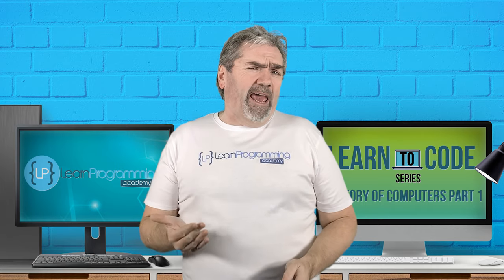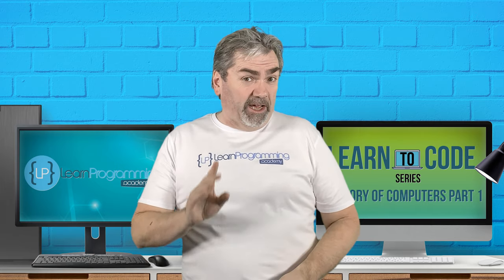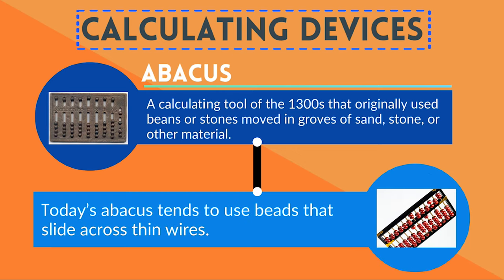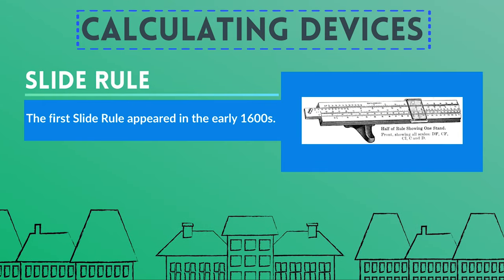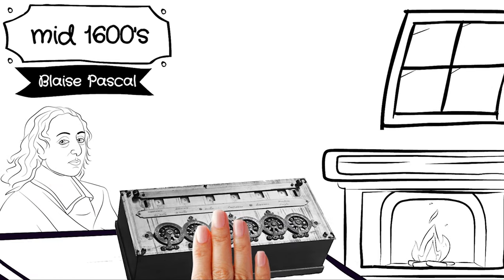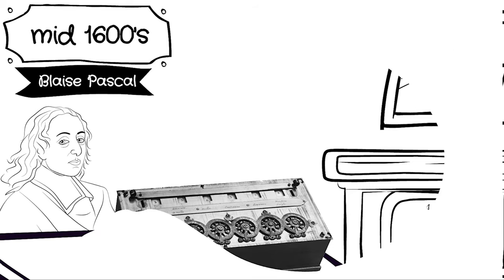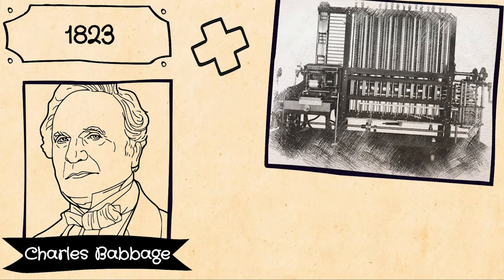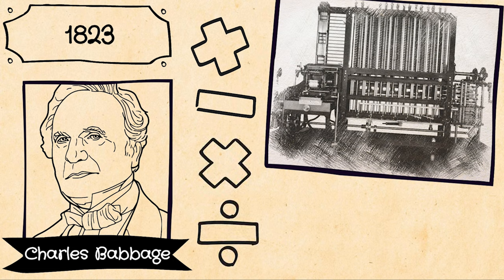Some often referenced calculating devices over the last 700 years include the abacus, a calculating tool of the 1300s that originally used beans or stones moved in grooves of sand, stone, or other material. Today's abacus tends to use beads that slide across thin wires. The first slide rule appeared in the early 1600s, and Blaise Pascal designed and built a mechanical calculator in the mid 1600s. Charles Babbage designed and built his difference engine in 1823, which could do addition, subtraction, multiplication, and division, and solve polynomial equations and other mathematical problems.